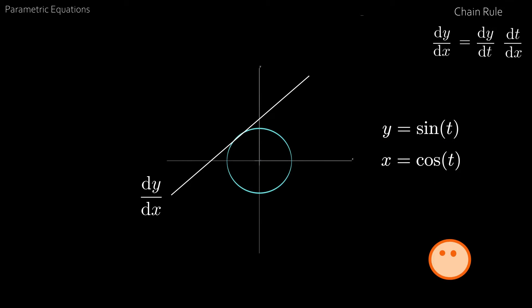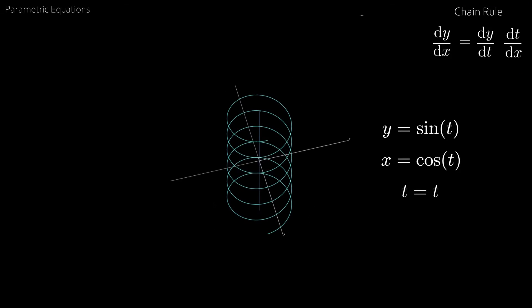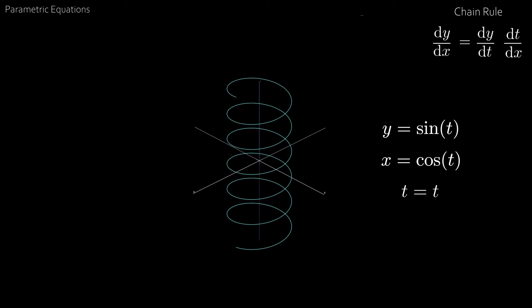So parametric differentiation is the exact same as the chain rule where the first step has actually already been done for us. Furthermore, this means we can visualize the chain rule because when we make the third variable substitution, we're actually accessing the three-dimensional analog of that function.